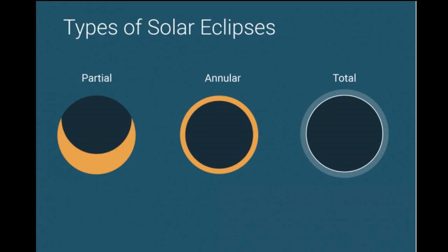There are three types of solar eclipses. Partial, where the Moon passes across the Sun's disc but never completely covers it. Annular, where because the Moon is at its furthest point in its orbit, there is a ring of the Sun around it. And a total eclipse, which is what we will be seeing on August 21st.